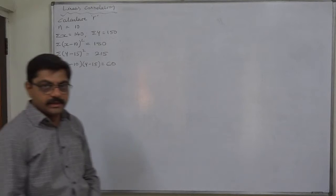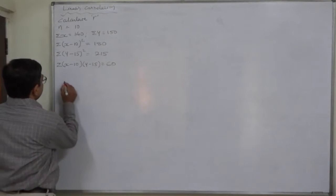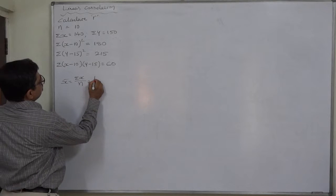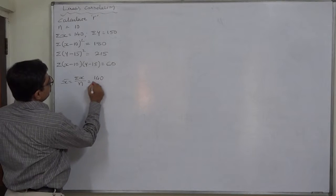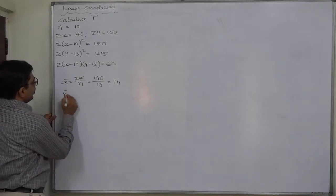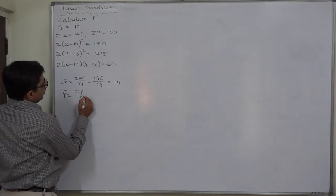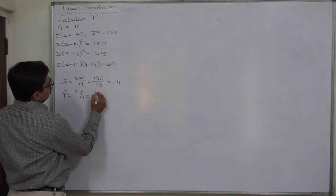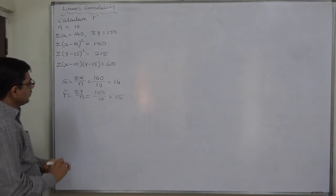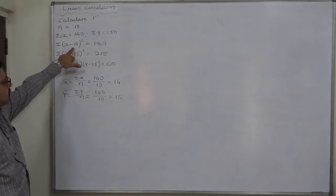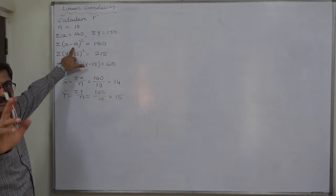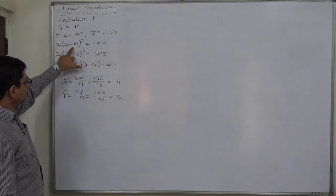Let us first find the arithmetic means. x̄ = σx/n = 140/10 = 14, and ȳ = σy/n = 150/10 = 15. So we can say that in the case of x, the amount subtracted (10) is not the actual arithmetic mean (14), so it must be the assumed mean.